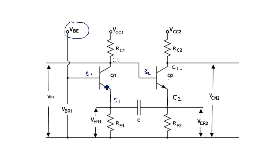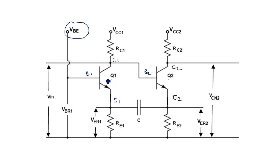When Q1 is in the ON state, a very low collector voltage appears at its collector. When this low voltage is applied to the base of Q2, Q2 does not turn ON — it remains OFF. This is the same push-pull configuration: if one transistor is ON, the other is definitely OFF.